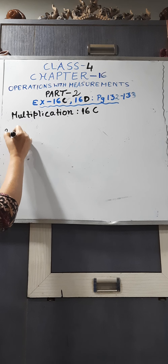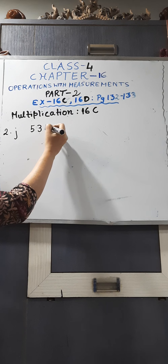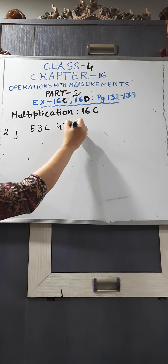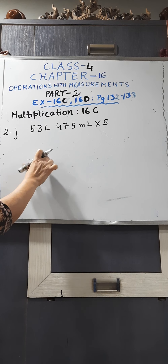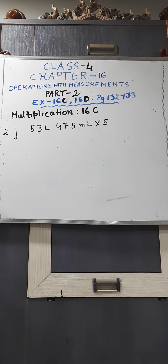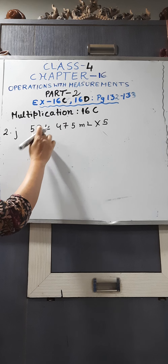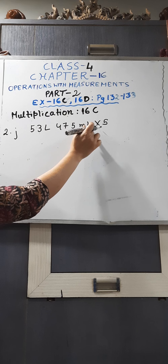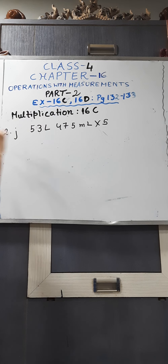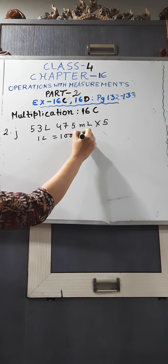Now 2j. 53 litre, 475 millimetre multiplied by 5. Here you can see the numbers are bigger. You can do one thing — you can first do the conversion. Litre is the bigger unit; convert litre to millimetre. Then you will do the multiplication. We all know that 1 litre is equal to 1000 millimetre.